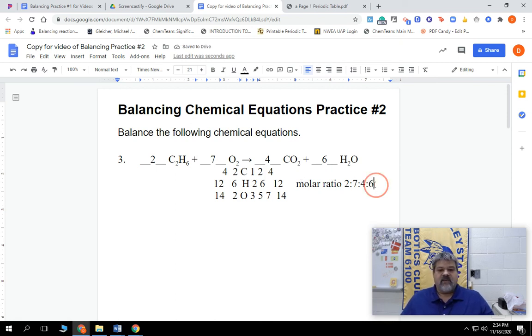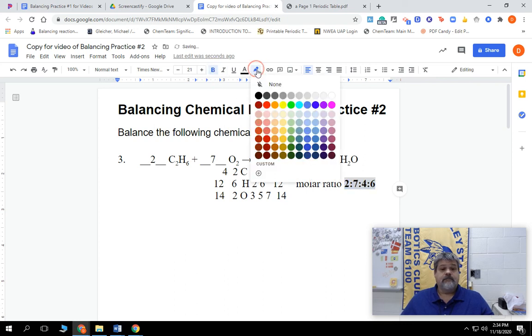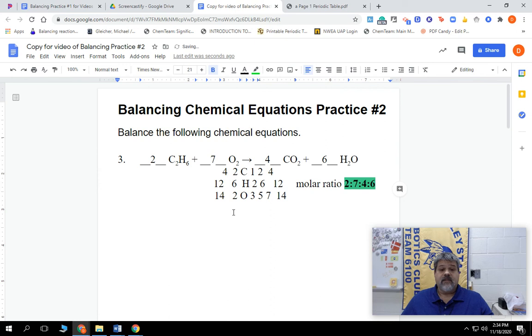Again, I always ask myself, can I reduce? Well, my smallest number is two, so can I reduce everything by two? Well, I cannot reduce the seven evenly by two, so I can't reduce them all. So we're going to go ahead and we will make that bold, highlight the answer. And there we go. There's our balanced chemical equation for problem number three of practice sheet number two. Hopefully you got some information out of that, if you didn't know how to do it, and good luck with the rest of them. Nelson out.